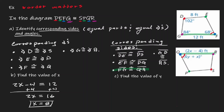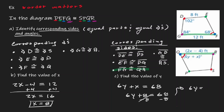If they are equal to each other, I have an equation. Therefore, 6Y plus X is equal to 68. But the nice thing about it is that we know what X is equal to — X is 8. So now we have 6Y plus 8 equals 68. Subtract 8 and we get 6Y is equal to 60. Dividing by 6, we get a value of Y equal to 10.